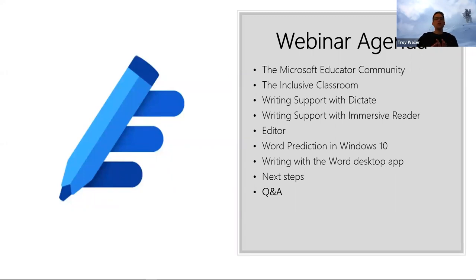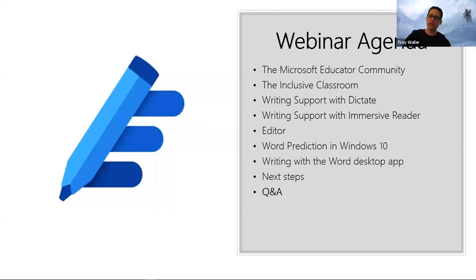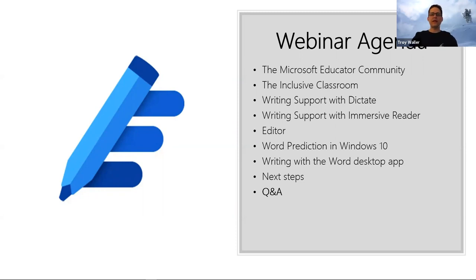What I'm presenting today is not an exhaustive list of all the things you can do to support writing with Microsoft tools. It's really looking at things that are new or more recently released. We're going to look at Dictate right across Office, Immersive Reader, Editor — which is Microsoft's new Office 365 writing support tool — Word prediction in Windows 10, writing with the Word desktop app, and some Immersive Reader features. Then we'll spend a bit of time on next steps and go into Q&A.